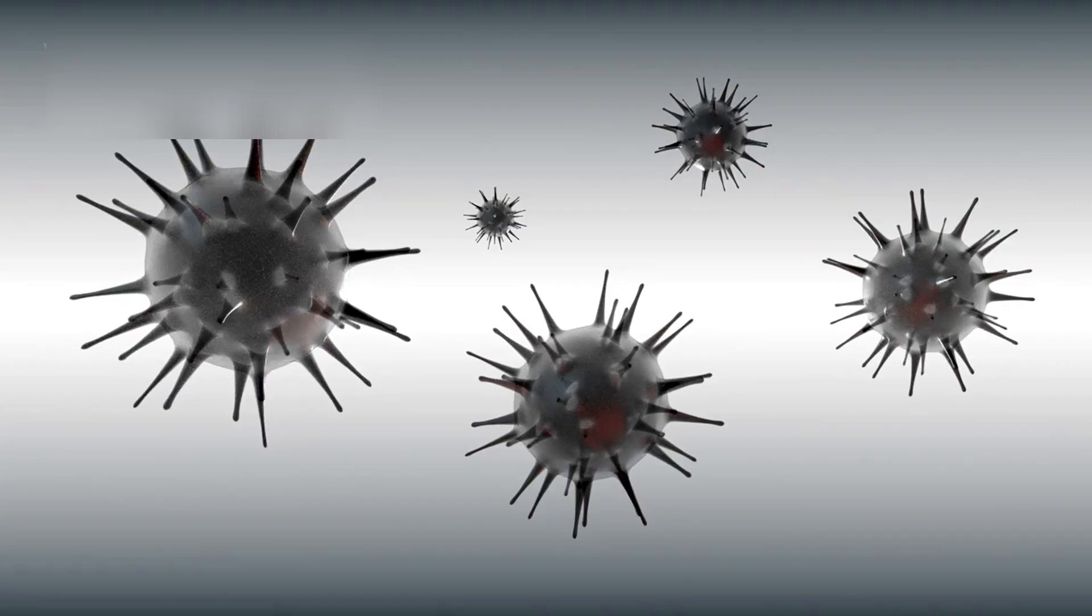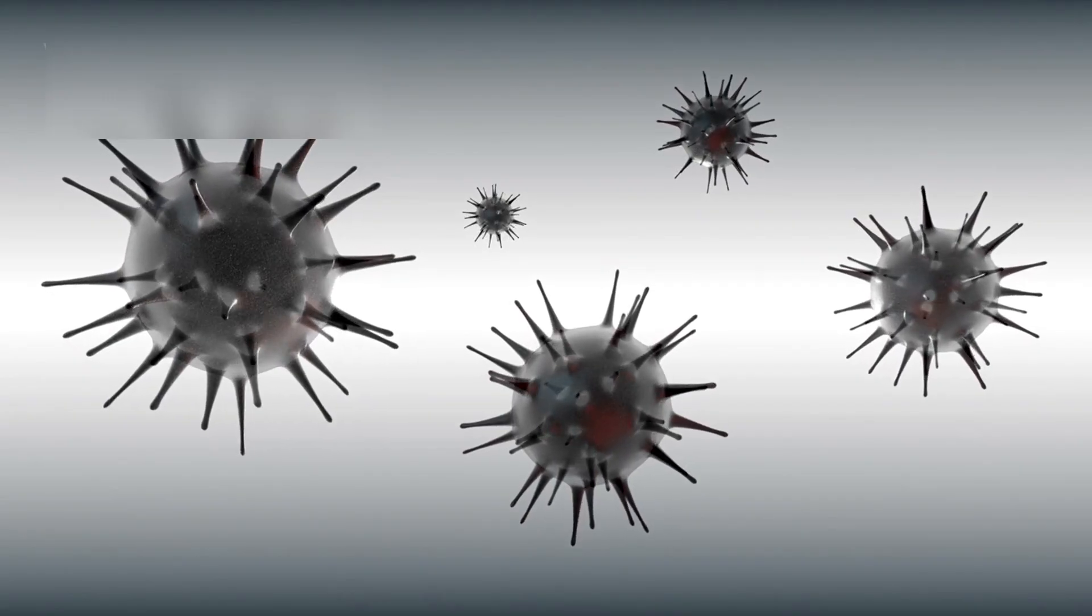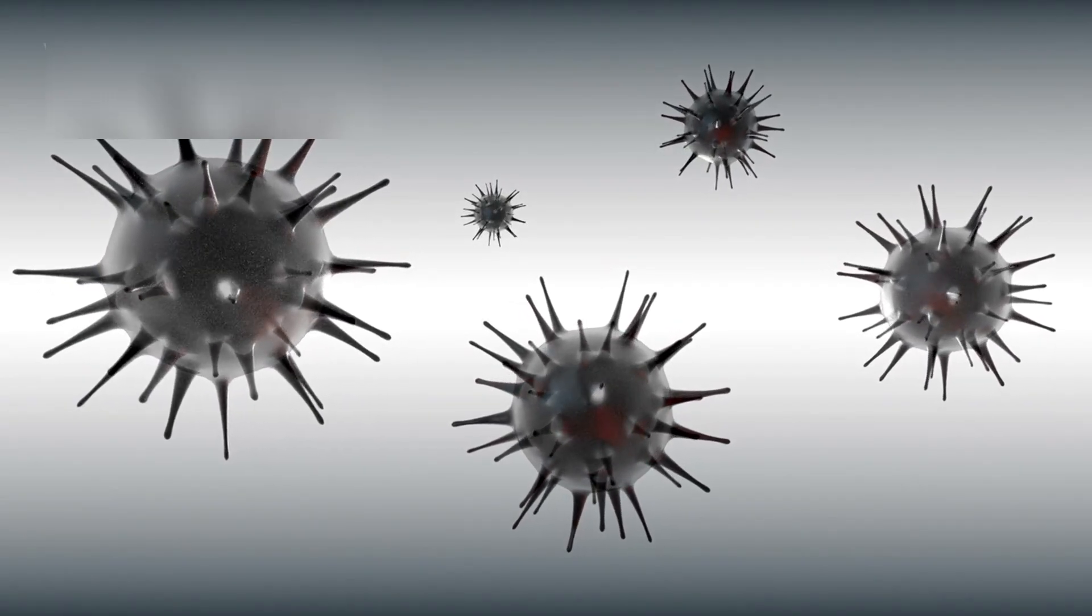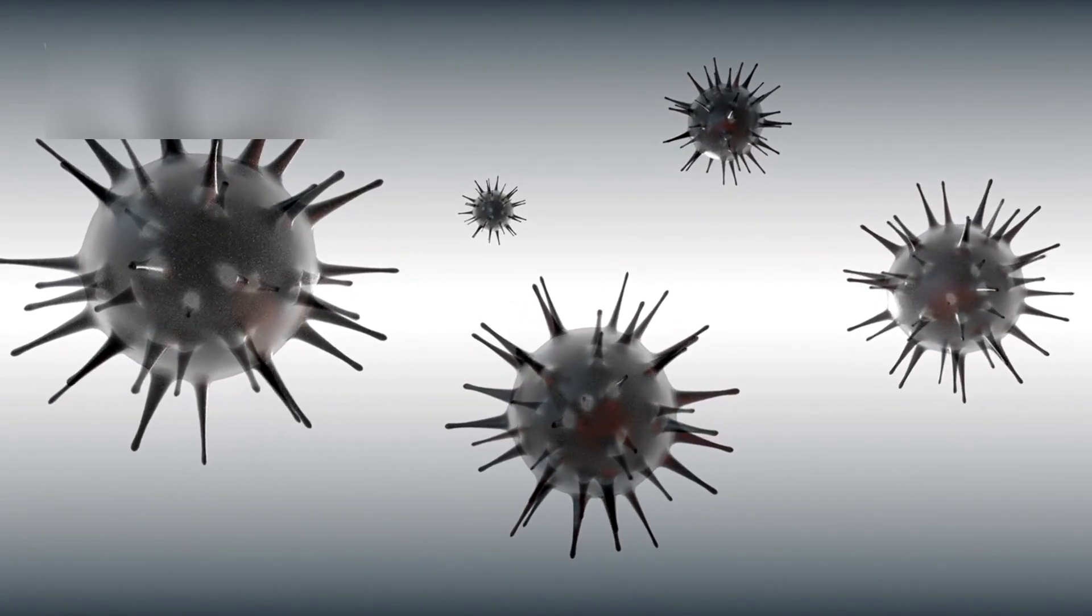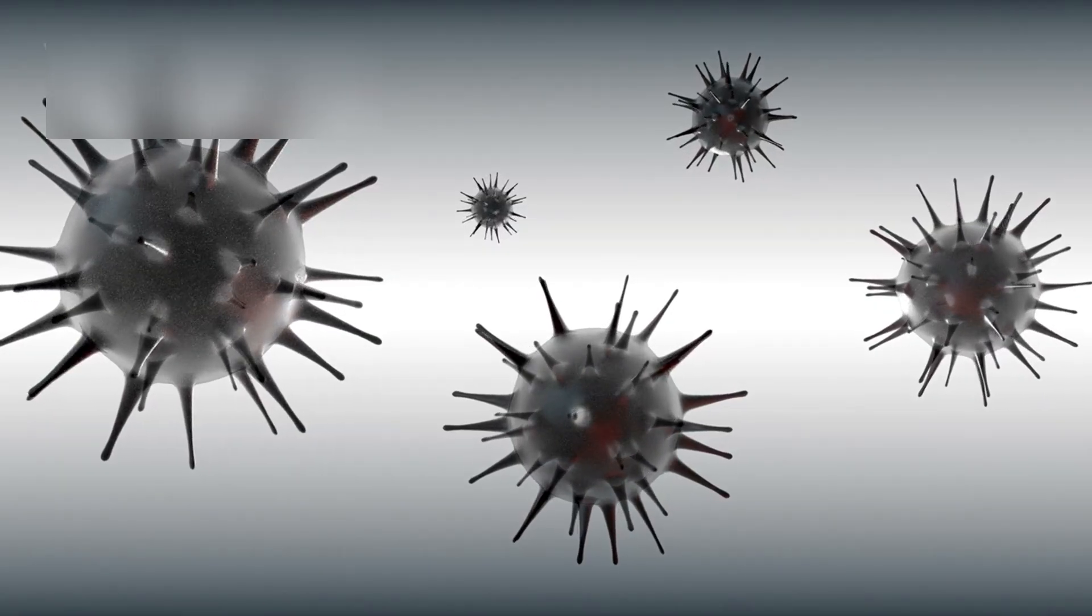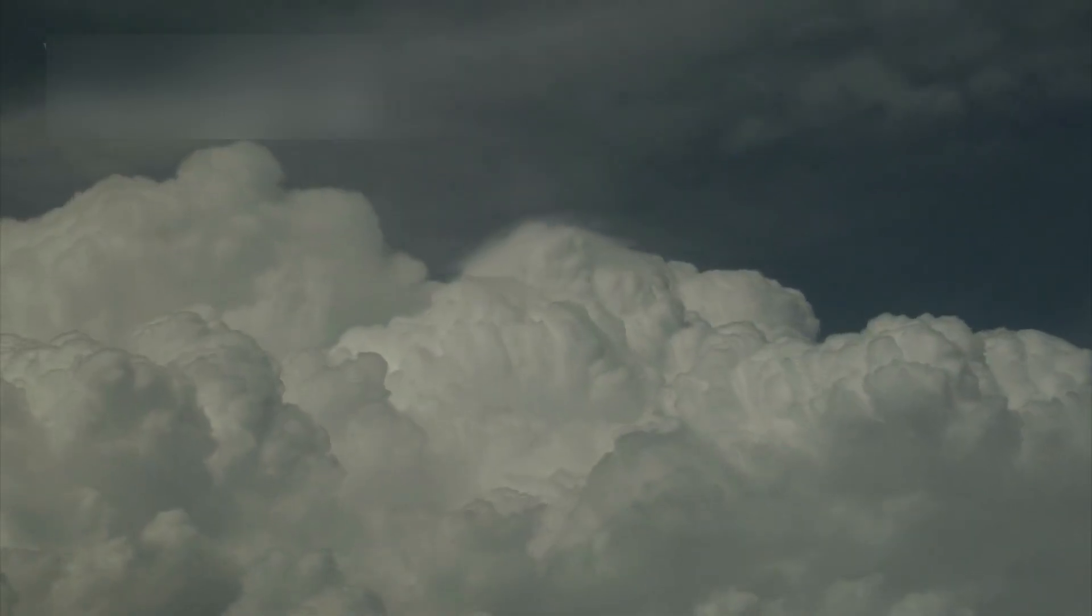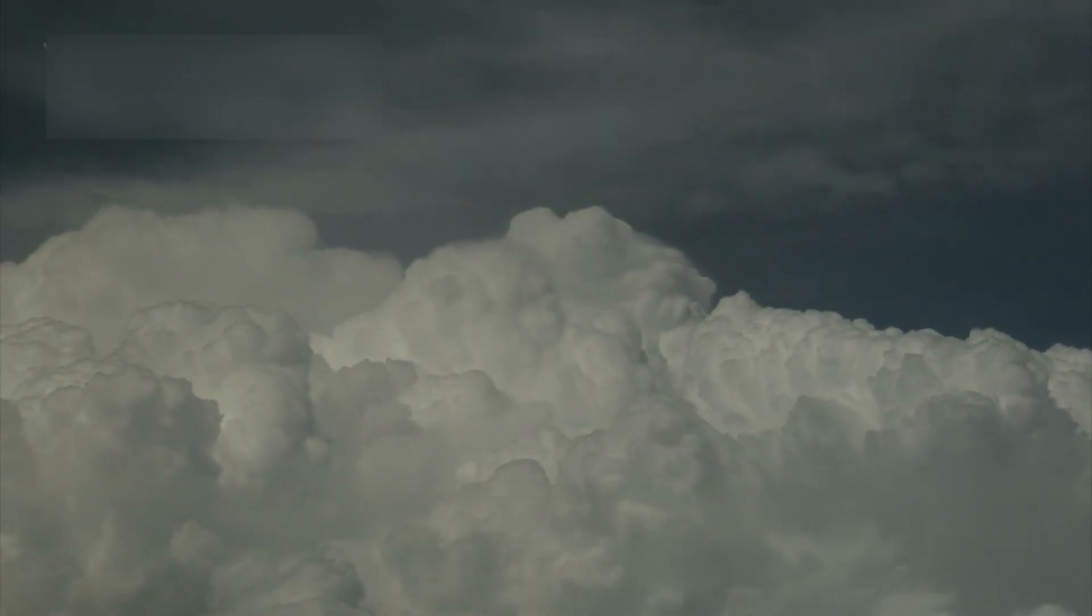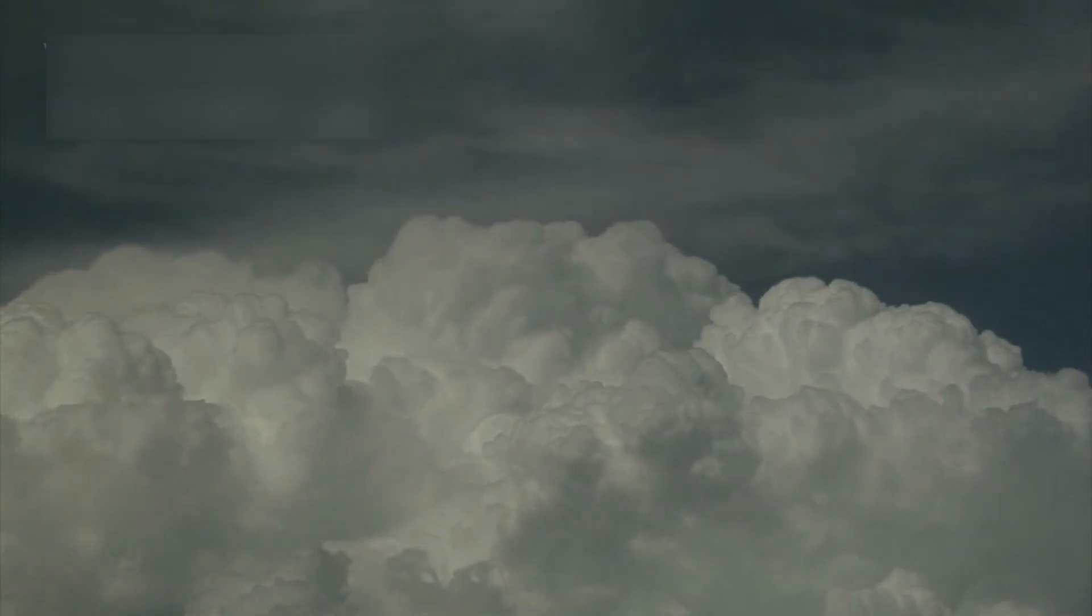And then came the most surprising clue: the possible detection of dimethyl sulfide, or DMS. On Earth, DMS is almost exclusively produced by life, specifically by tiny marine microorganisms that live in our oceans. It contributes to cloud formation and acts as a subtle chemical signature of biology. If confirmed on K218b, it would be one of the strongest biosignatures ever identified beyond our solar system.